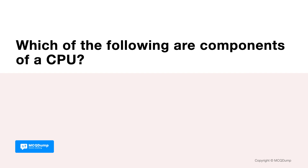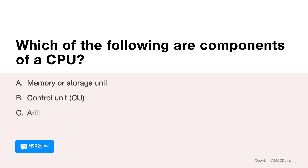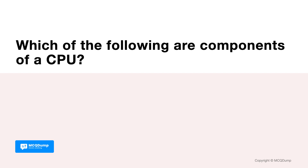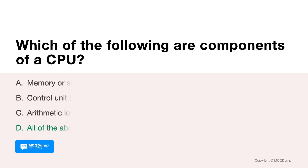Which of the following are components of the CPU? Options are: A. Memory or Storage Unit, B. Control Unit (CU), C. Arithmetic Logic Unit (ALU), and D. All of the above. Answer is D. All of the above are components of a CPU.